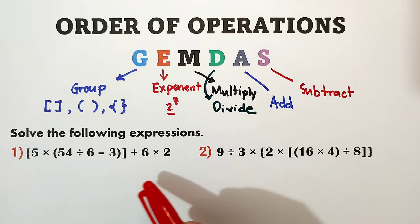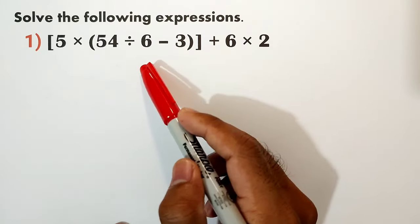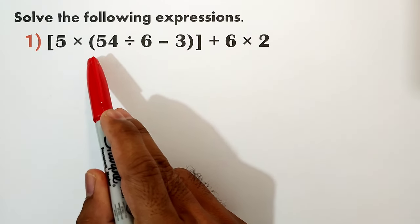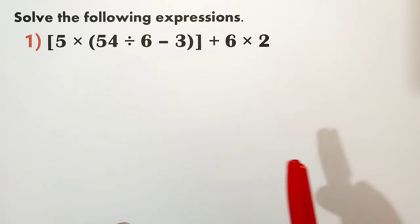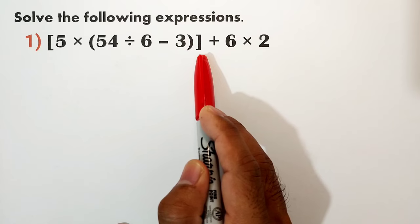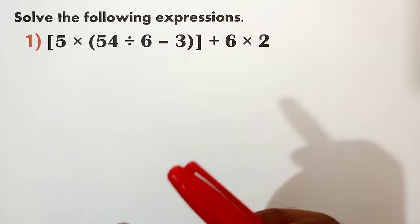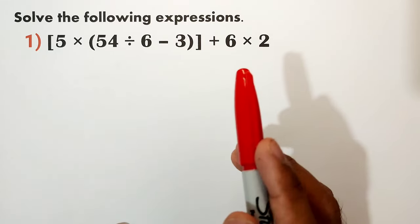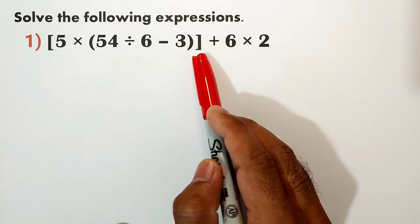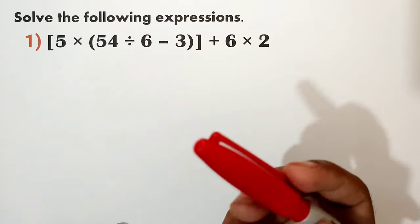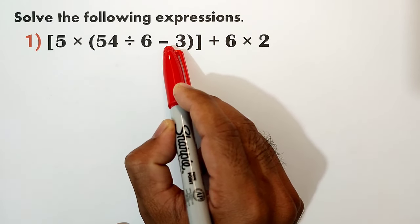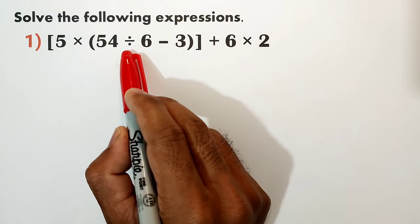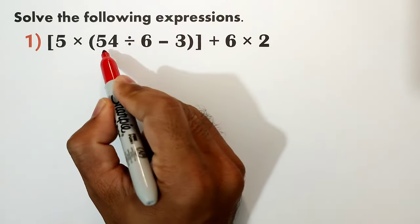Let us simplify the given expression in item number 1 and item number 2. Item number 1: quantity 5 times the quantity 54 divided by 6 minus 3, plus 6 times 2. As you can see, we have a group enclosed by bracket. According to our order of operation, group must be simplified first. Inside the bracket symbol, we also have parentheses — so that is also a group. We simplify what is inside the parentheses first. Inside the parentheses we have division and subtraction, and according to order of operations, division must come first before subtraction. That's why we divide 54 by 6.